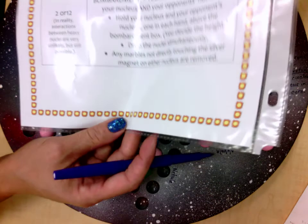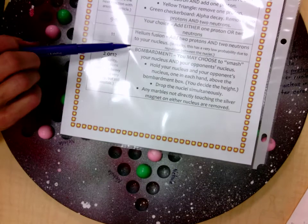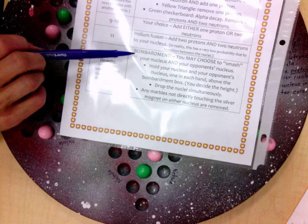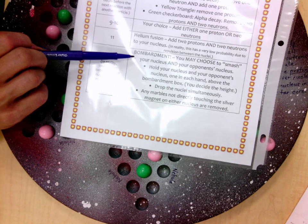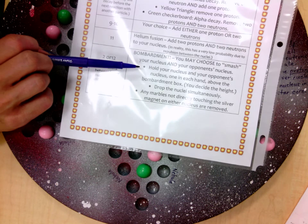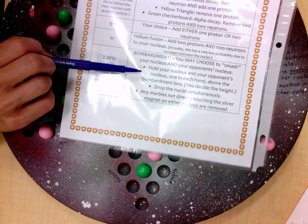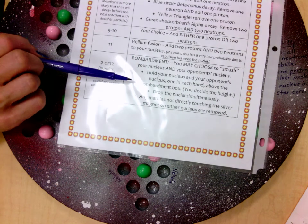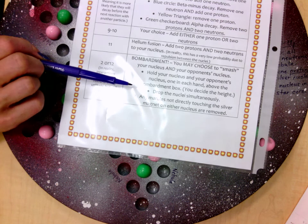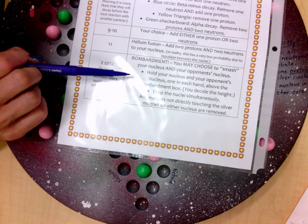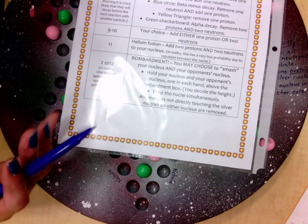The most exciting rule is if you get a two or a twelve. That's bombardment. And with bombardment, you have a bombardment box in the classroom. You're going to hold your nucleus and your opponent's nucleus above the bombardment box. And it should be a height below your chin. And you're going to drop the nuclei one at a time into the box and see what happens.